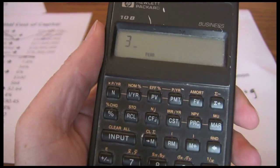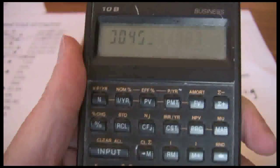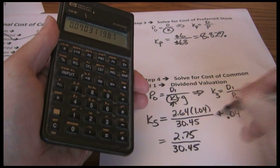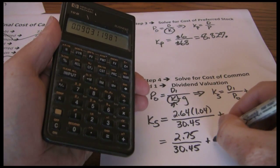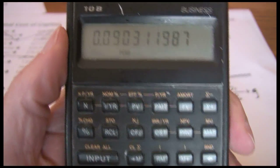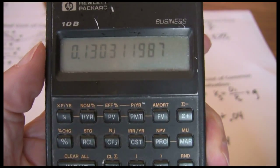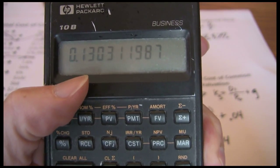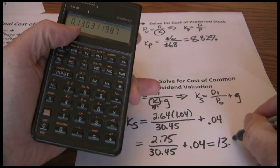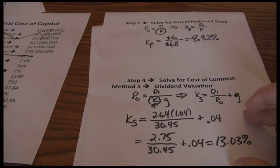Then divide by $30.45 which is our price, add in the 0.04, and get 0.1303. Now remember this is in decimal, we need to convert it to percentage, so it should be 13.03% for our cost of common stock financing.